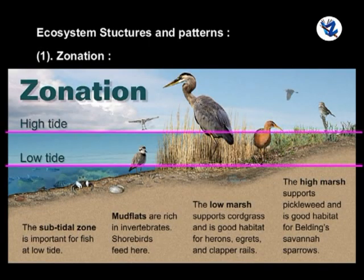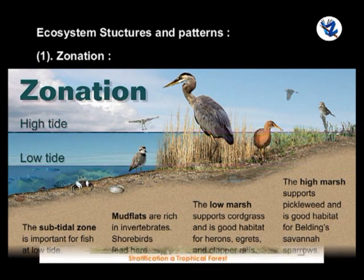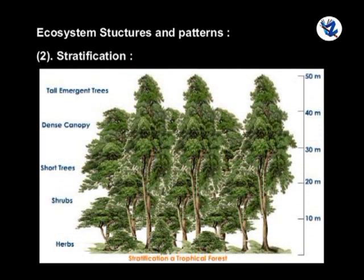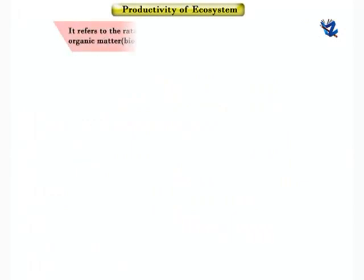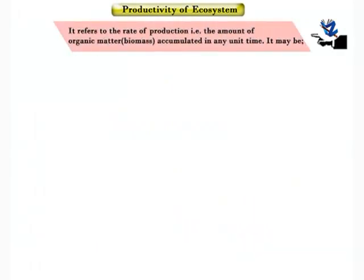There are two recognized spatial patterns in ecosystem structure. One is zonation, which occurs horizontally along the ground — density and distribution of species vary along a horizontal gradient. The other is stratification, which occurs vertically, determined by the height of the organism, for example in a forest community.